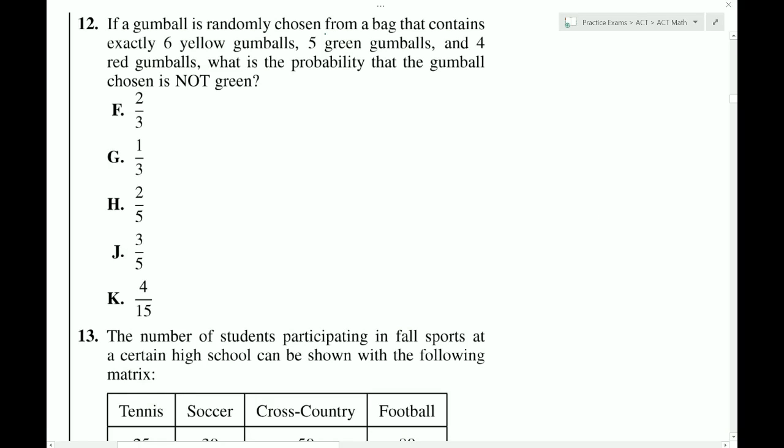If a gumball is randomly chosen from a bag that contains exactly 6 yellow, 5 green, and 4 red, what is the probability that the gumball chosen is not green? So there's 5 green, 6 and 4. 6 and 4 is 10, and 5 is 15. That's our total.